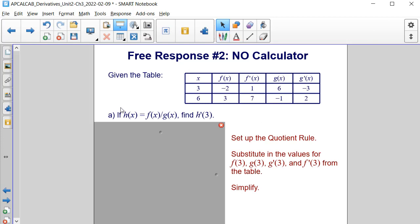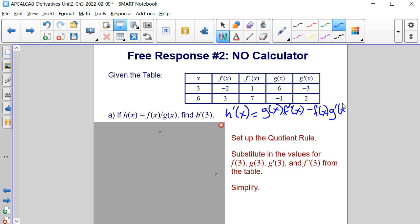Let's start with part A. If h of x is equal to f of x divided by g of x, find h prime of 3. Let's start by setting up the quotient rule. So h prime of x is equal to the bottom, g of x, times the derivative of the top, f prime of x, minus the top, f of x, times the derivative of the bottom, or g prime of x, all over the bottom squared.